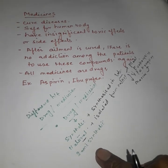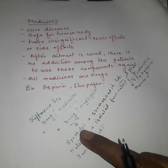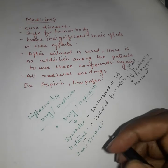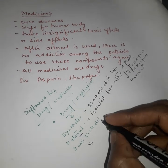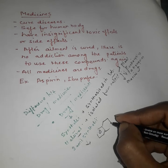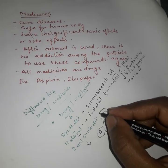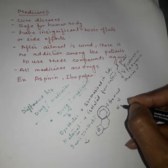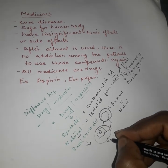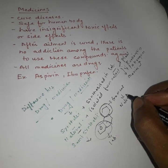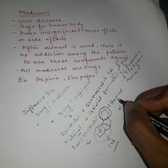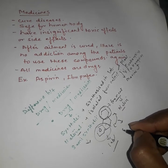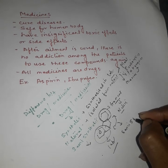If they are synthesized in a lab, their origin is synthetic. If they are isolated from nature, they are natural drugs. If a drug has a simple framework where some fragment or moiety is isolated from nature and some part is prepared in the lab, and these two fragments are joined together, then the compound is called semi-synthetic.